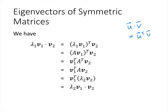So if we take lambda 1 v1 dotted with v2, that's lambda 1 v1 transpose times v2, which equals A v1 transpose times v2, because v1 is an eigenvector associated with eigenvalue lambda 1. Now using the property that the transpose of a product reverses order, we get v1 transpose A transpose times v2. But A is symmetric, so A transpose equals A. Then A v2 equals lambda 2 v2, and the scalar lambda 2 can be pulled out, giving lambda 2 times the dot product v1 dot v2.